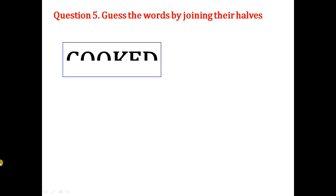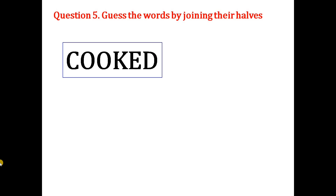Next question: guess the word by joining their halves. This is an incomplete word — we don't know what it is. We have to join the other parts. These letters are half — we have to join the other parts to get the full word. Yes, this is completed: C-O-O-K-E-D, cooked. Next one — this is the half part of the word; if we complete this...